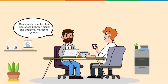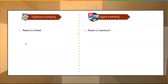One gentleman asks: can you mention a few differences between digital and traditional marketing systems? The expert responds: of course. So on traditional marketing, we're talking about print, radio, billboard, newspaper, TV — anything that's not on your mobile or laptop. We know that traditional marketing reaches a limited audience, while digital marketing reaches a maximum audience.